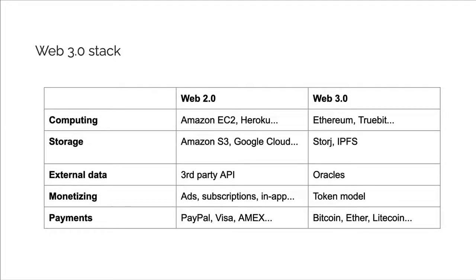Let's compare the Web2.0 stack to the Web3.0 stack. For computing, Web2.0 uses Amazon EC2 and Heroku, whereas Web3.0 uses the Ethereum blockchain or Truebit. For storage, Web2.0 uses databases like Amazon S3 or Google Cloud, while Web3.0 has alternatives like StoreJ and IPFS. For external data, Web2.0 uses third-party APIs while Web3.0 uses Oracles. To monetize, Web2.0 uses ads, subscriptions, and in-app purchases, while Web3.0 uses the token model with cryptocurrencies. For payments, Web2.0 uses PayPal, Visa, and Amex, whereas Web3.0 uses cryptocurrencies like Bitcoin and Ether.